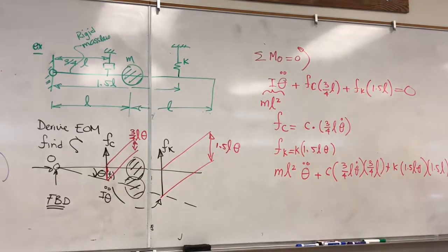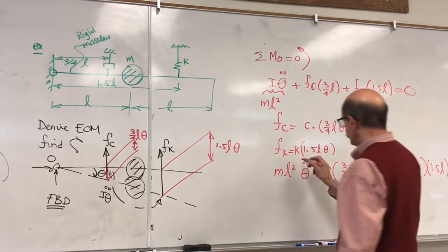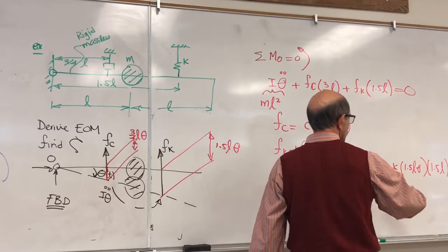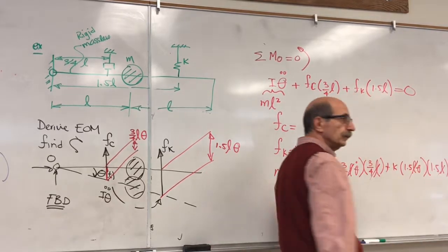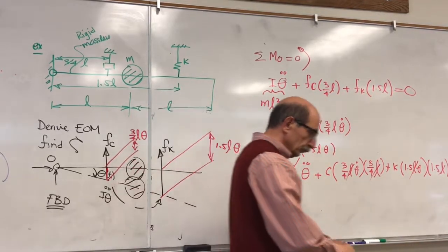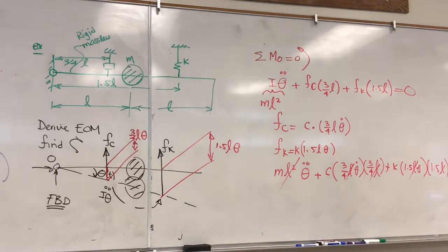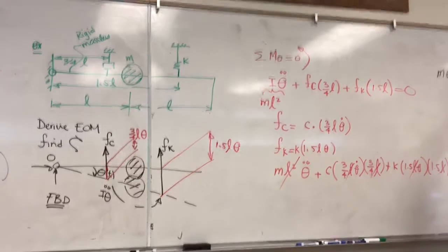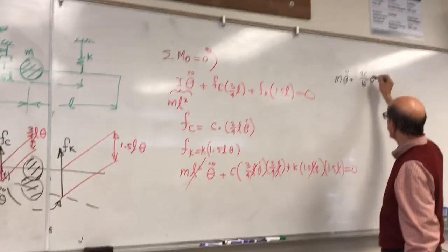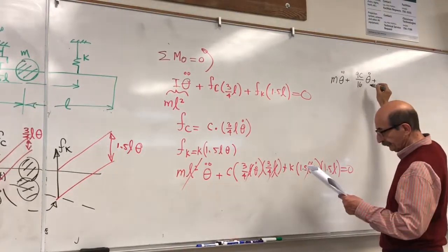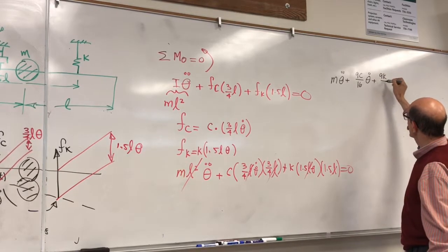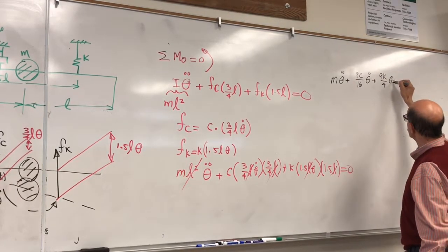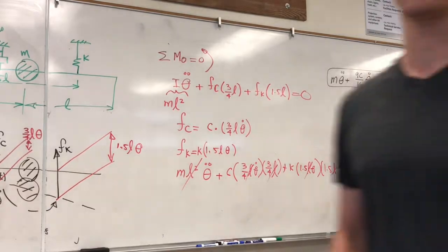Substituting into that equation, you get ML² theta-double-dot plus C(3/4 L)(3/4 L) theta-dot plus K(1.5L)(1.5L) theta = 0. Simplifying — L² will cancel out when you divide through by L². What you get is: M theta-double-dot plus (9C/16) theta-dot plus (9K/4) theta = 0. This is the equation of motion.